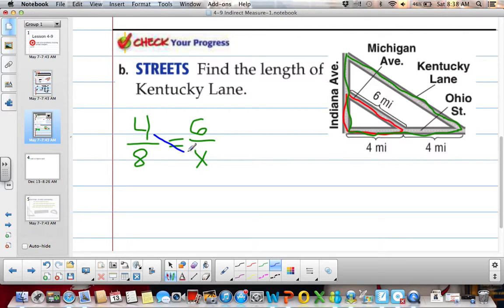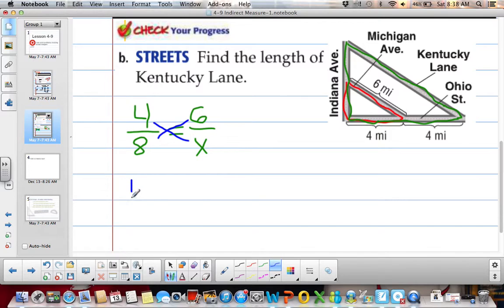So 4 and x and 6 and 8. So we get 4x equals 48. Divide both sides by 4. x equals 12 miles.